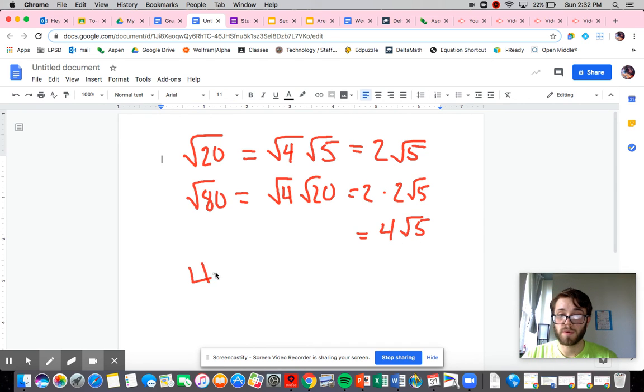So 4 square roots of 5 over 2 is 2 square roots of 5. I didn't touch the square root of 5. We leave that alone. We just apply the 2 to the 4, all right?